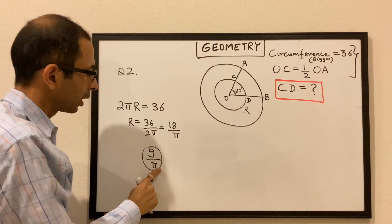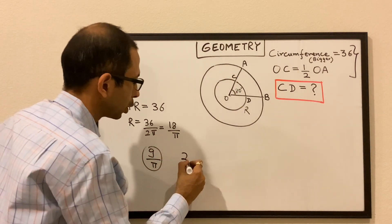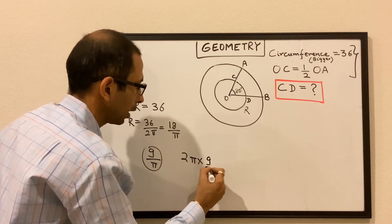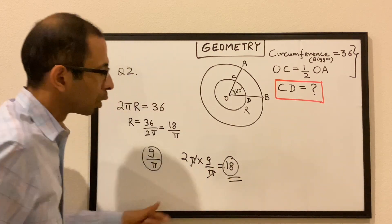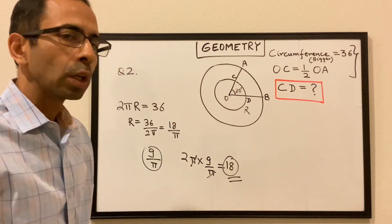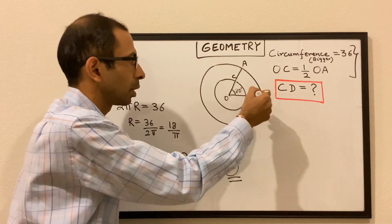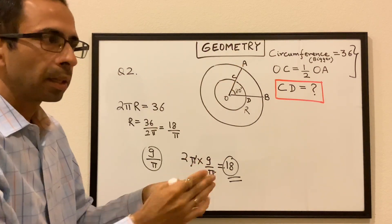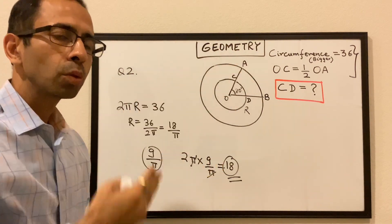Now when we know the radius of the smaller circle, we can find the circumference of the smaller circle, which will be 2 times π times R of the smaller circle, which is 9 over π, giving us 18. So the circumference of the smaller circle is 18 units. As we have seen in the past, the ratio of the circumference to the central angle remains the same. The bigger the circumference, the bigger the central angle; the smaller the arc length, the smaller the central angle — those two go in the same proportion.